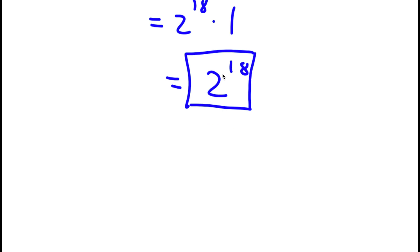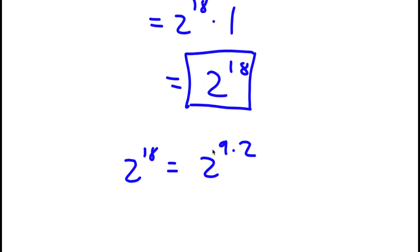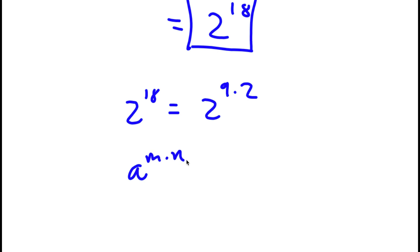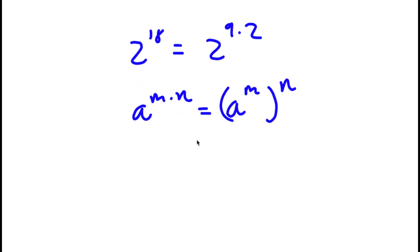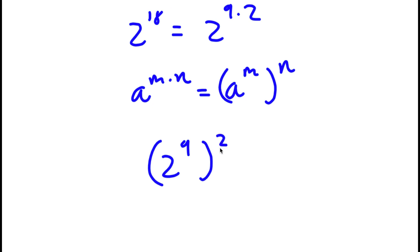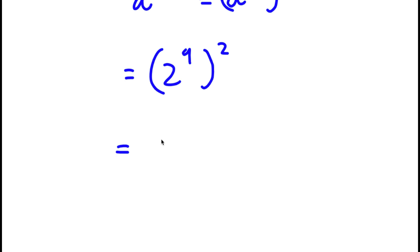Now, although this is a solution, I'm actually going to find a way to simplify this further. So 2 to the power of 18 is the same thing as 2 to the power of 9 times 2. And if I have something in the form a to the power of m times n, this is the same thing as a to the power of m to the power of n. So 2 to the power of 9 times 2 is going to be 2 to the power of 9 to the power of 2. Now, 2 to the power of 9 is equal to 512, so I have 512 to the power of 2.